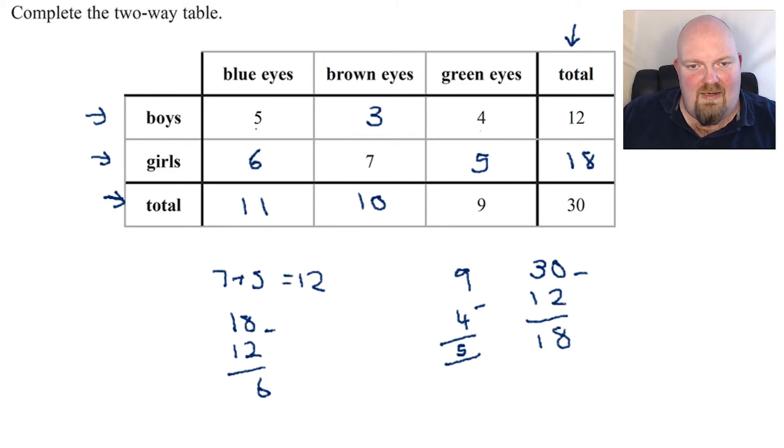And then just as a very final check, if I add these values up here, hopefully they should all work now. So 11 add 10 is 21. 21 add nine is 30. So I'm happy that I've finished all of those and that it works.